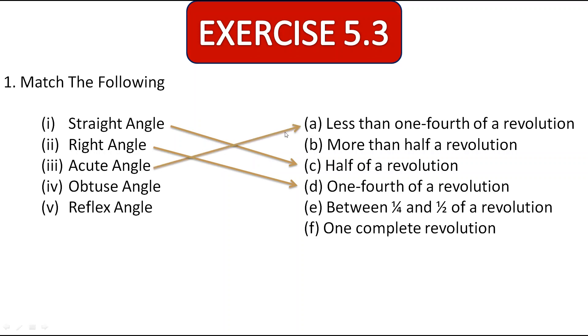Next comes obtuse angle. Obtuse angle is greater than 90 degrees and less than 180 degrees. See here, between one-fourth of a revolution, so one-fourth means 90 degrees and half means 180 degrees, so it is obtuse angle. Next comes reflex angle. Reflex angle is more than 180 degrees and less than 360, so more than half a revolution can get matched with reflex angle. One complete revolution, there is no other option to match with it. So this is the first question answer.